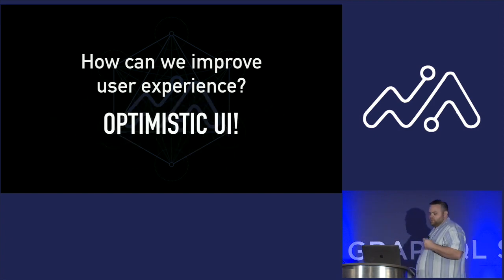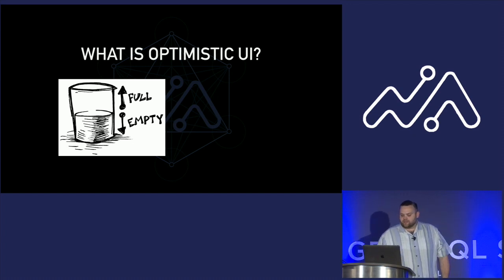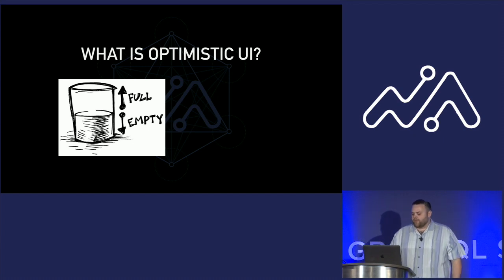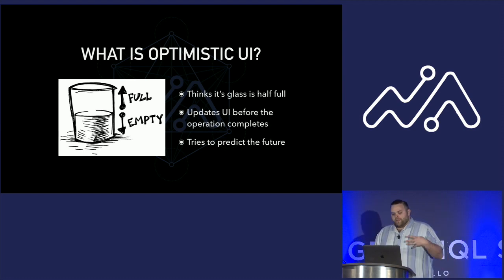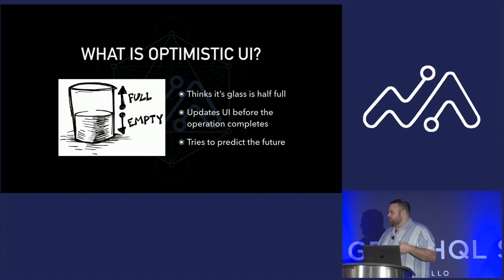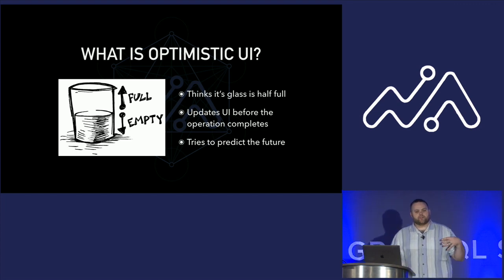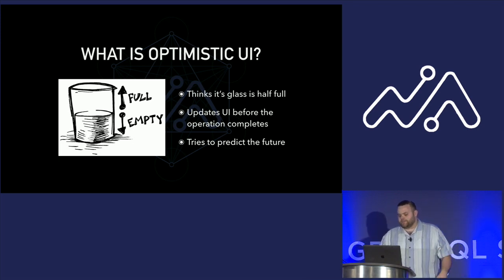Optimistic UI. What is Optimistic UI? It's a UI that thinks its glass is half full. The idea is when you send off an operation, the UI will update before the operation returns. It's basically trying to predict the future to produce an output on your UI.